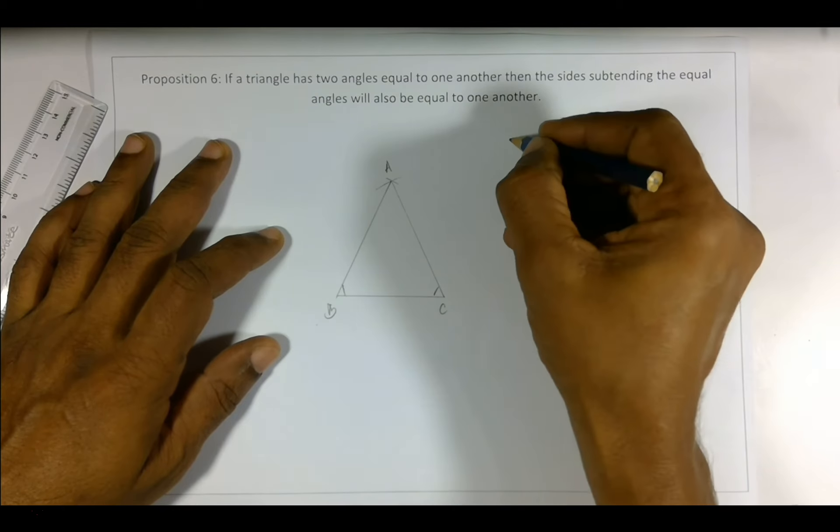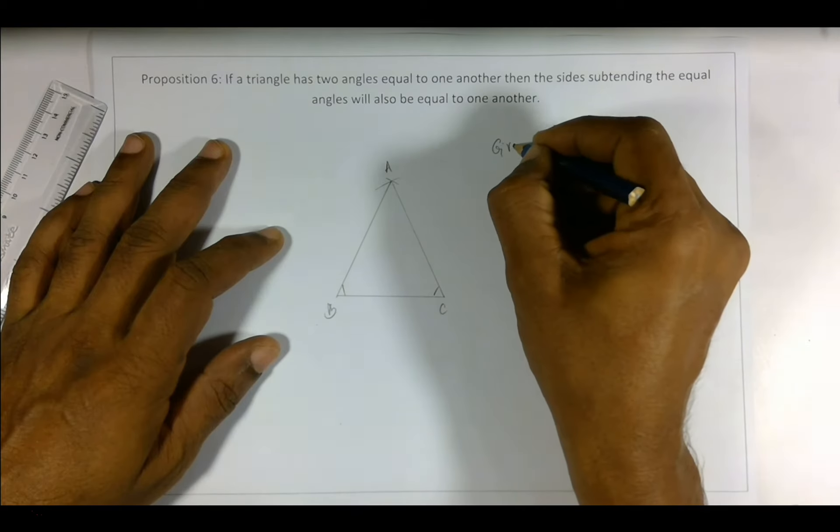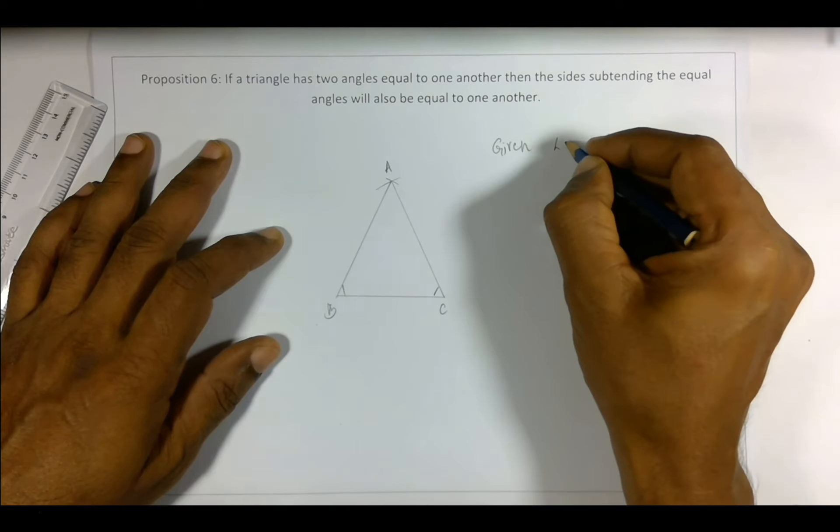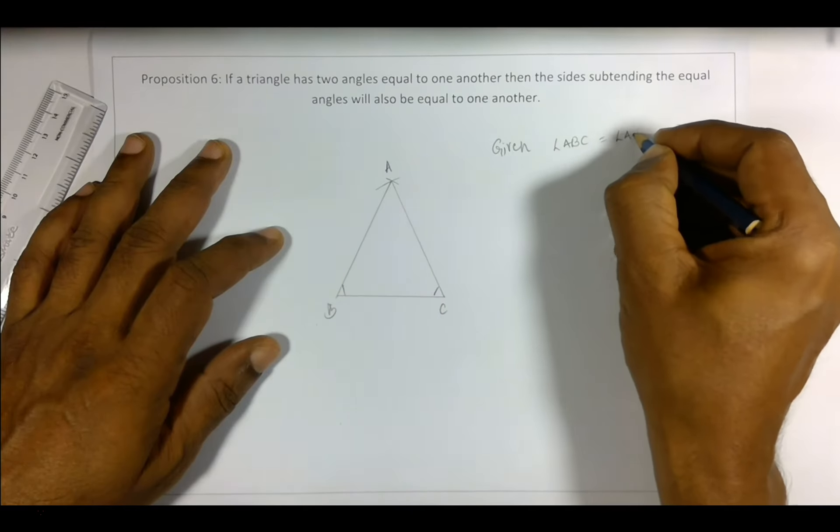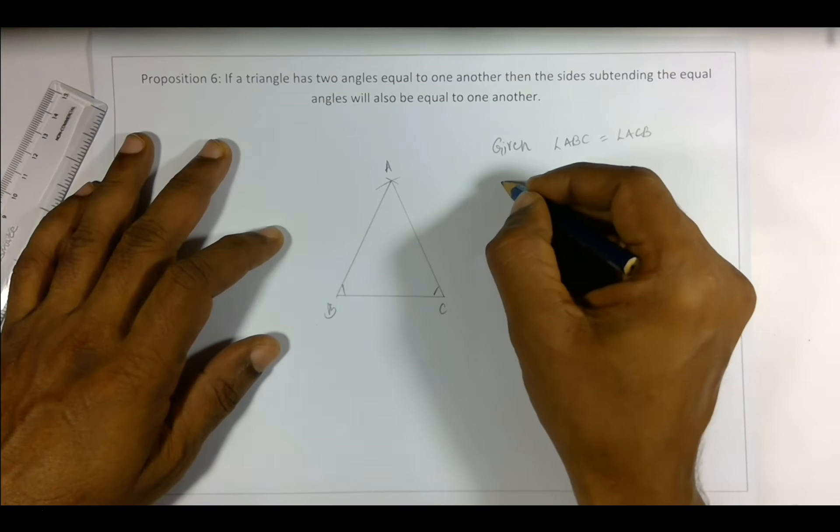But let me just first write off what is given. Given is angle ABC is equal to angle ACB. Here, what we have to prove...